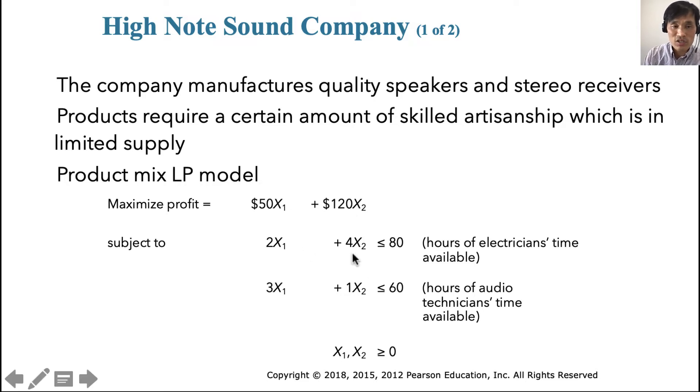Products require certain amount of constraints. For example, we have two constraints here. The electricians constraint says 2X1 + 4X2 ≤ 80, meaning to produce one speaker you need to spend two hours of electrician time, and four hours of electrician's time for a stereo receiver. And 2X1 + 4X2 ≤ 80, meaning that the resource you have for electricians time is 80 hours.